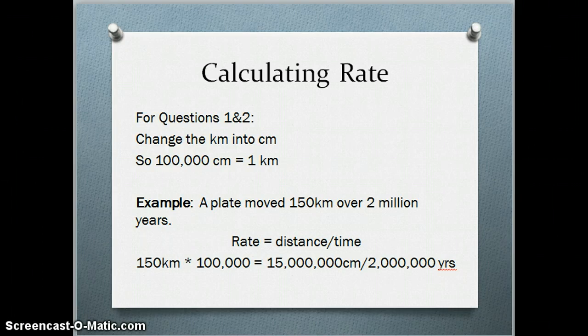So for example, if a plate moved 150 kilometers over 2 million years, the way that you find that is you take distance and you divide it by time. So the first step would be to take the 150 kilometers and change them into centimeters, and you do that by taking 150 times 100,000, and you get 15 million, and then you divide that by the time. So you take 15 million and you divide it by 2 million, and you will get the rate, centimeters per year. And that's how you'd find the answers for questions 1 and 2.